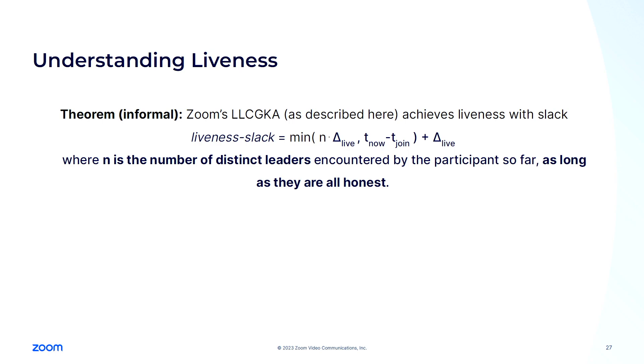Why is this the case? Because essentially this estimate, this difference is essentially equivalent to the network delay on the packets and since we know that Alice started at time zero and received the first heartbeat before time delta live, this is the maximum amount that the delivery must have been taken because the heartbeat must have been generated after time zero because it includes the Alice's key. So when you start formalizing this and then try to come up with a theorem, this is what you get for the liveness slack. We have the first term, which bounds the error between the estimate delta and the actual offset and the second term, which is this plus delta live, accounts for the fact that after receiving the heartbeat, Alice will wait for that long before dropping out. If you look at the first term a little bit more, n is the number of distinct leaders that Alice has encountered so far and t now minus t join is the time that Alice or the participant has spent in the meeting.